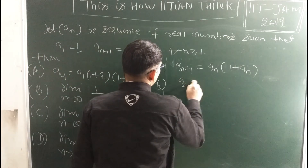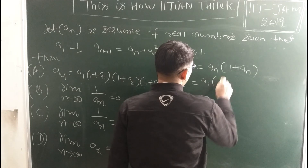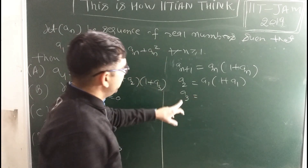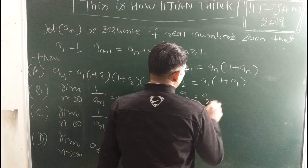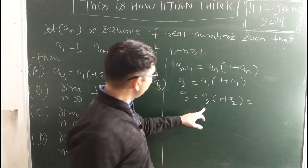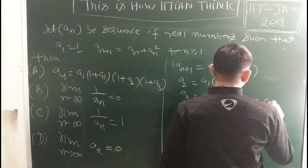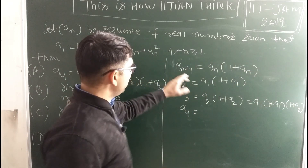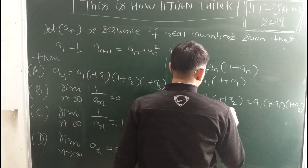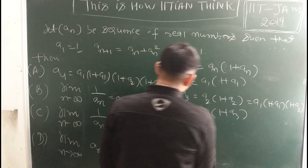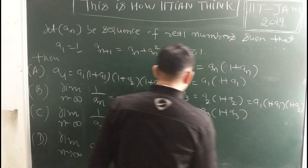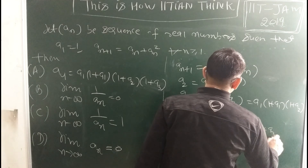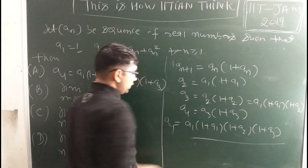Now put n=1: it implies a₂ = a₁(1 + a₁). Then n=2 implies a₃ = a₂(1 + a₂), but a₂ is a₁(1 + a₁). Putting n=3 we get a₄ = a₃(1 + a₃), which gives a₄ = a₁(1 + a₁)(1 + a₂)(1 + a₃). This is precisely option one, so option 1 is correct.